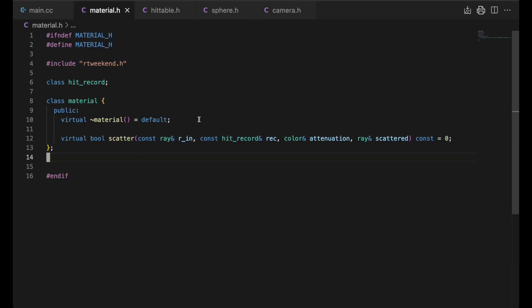Dr. Shirley now introduces an abstract material class, instances of which implement a scatter method that will produce these two values. The scatter method takes two input parameters: a hit record and an incident ray. Attenuation and the scattered ray are output parameters. Note this method returns a bool. False means the incident ray was absorbed.